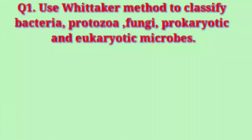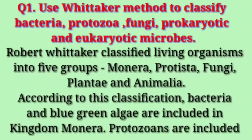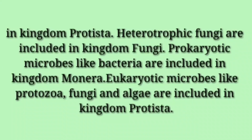Question 1: Use Whitaker's method to classify Bacteria, Protozoa, Fungi, Prokaryotic and Eukaryotic microbes. Answer: Robert Whitaker classified living organisms into five groups — Monera, Protista, Fungi, Plantae and Animalia. According to this classification, Bacteria and Blue-Green Algae are included in Kingdom Monera. Protozoa are included in Kingdom Protista. Heterotrophic Fungi are included in Kingdom Fungi. Prokaryotic microbes like Bacteria are included in Kingdom Monera. Eukaryotic microbes like Protozoa, Fungi and Algae are included in Kingdom Protista.